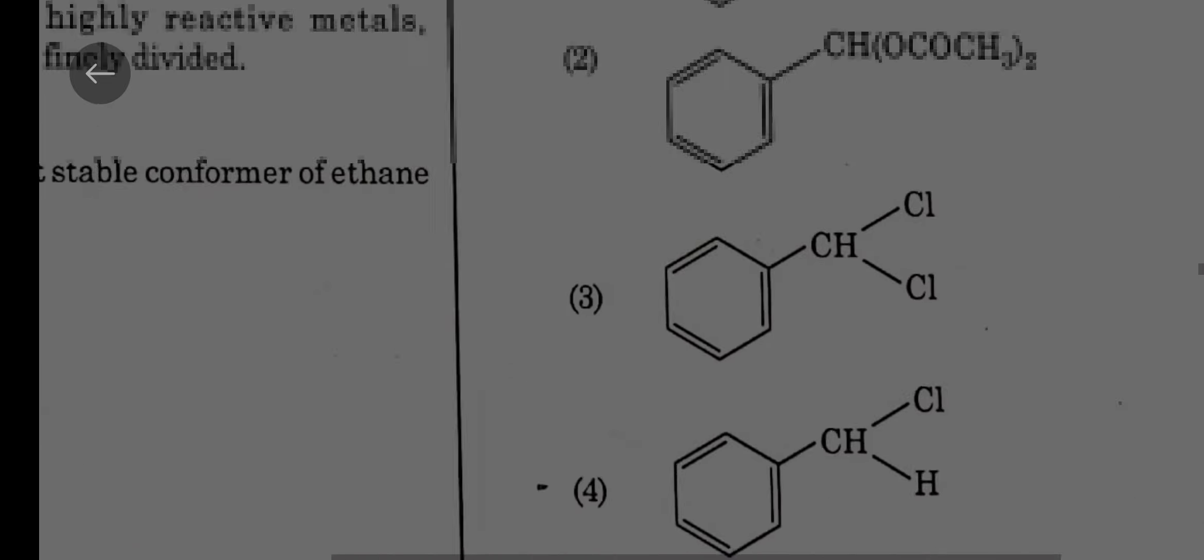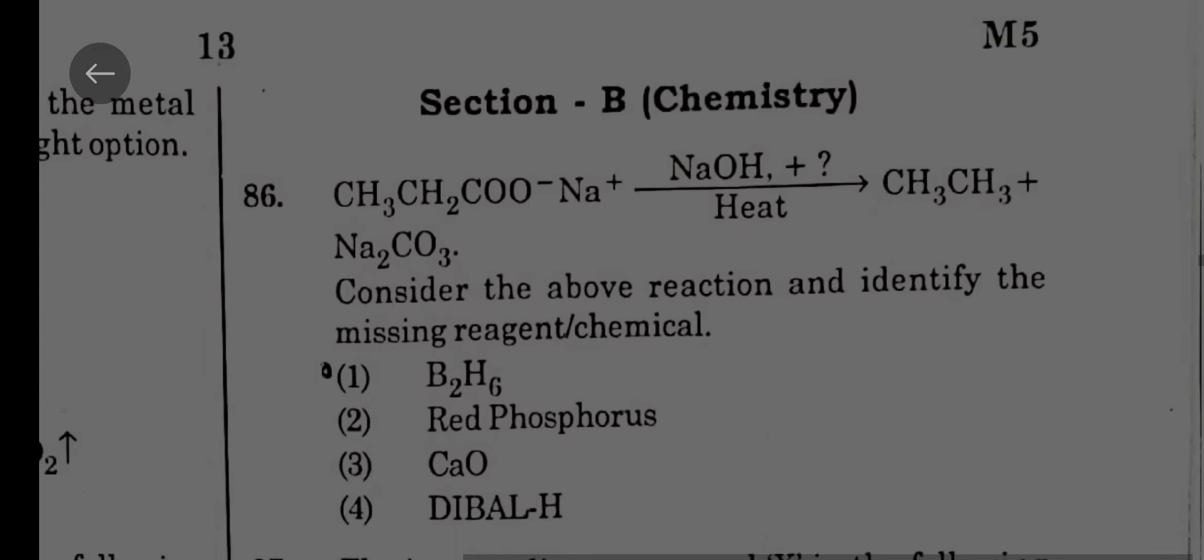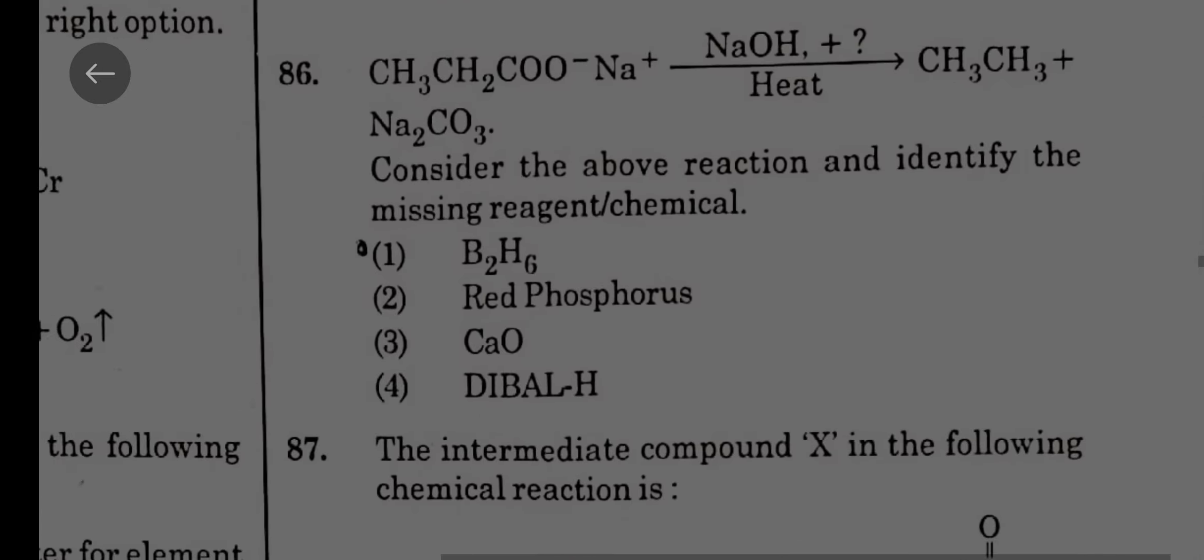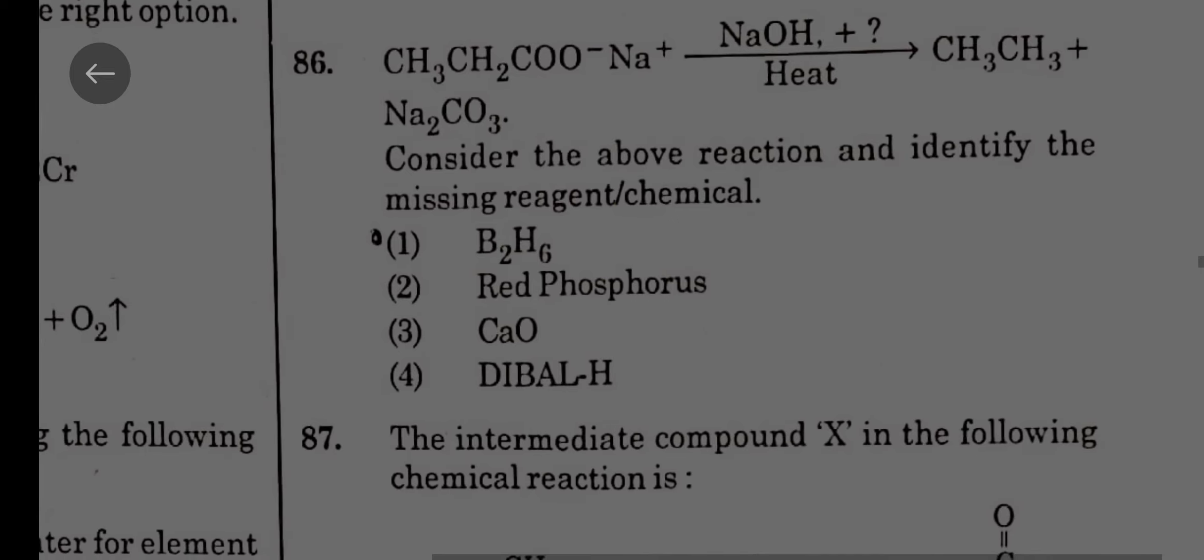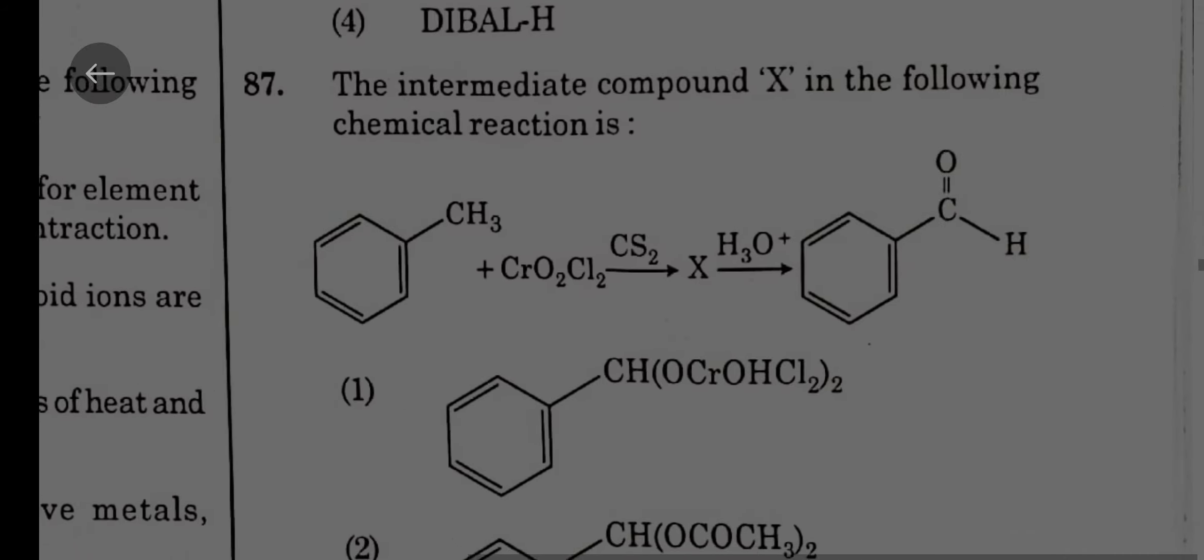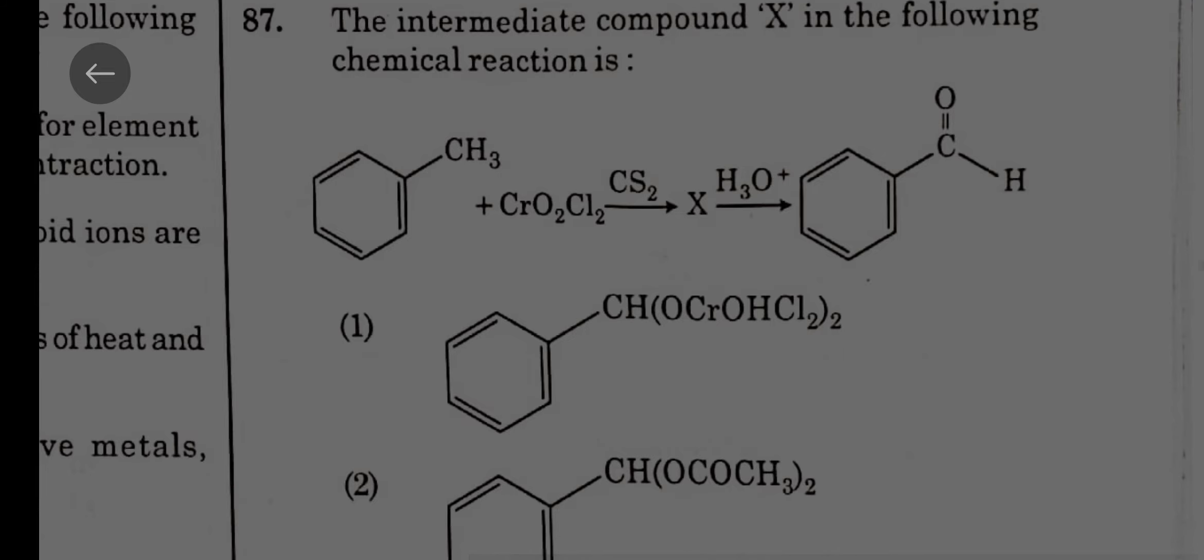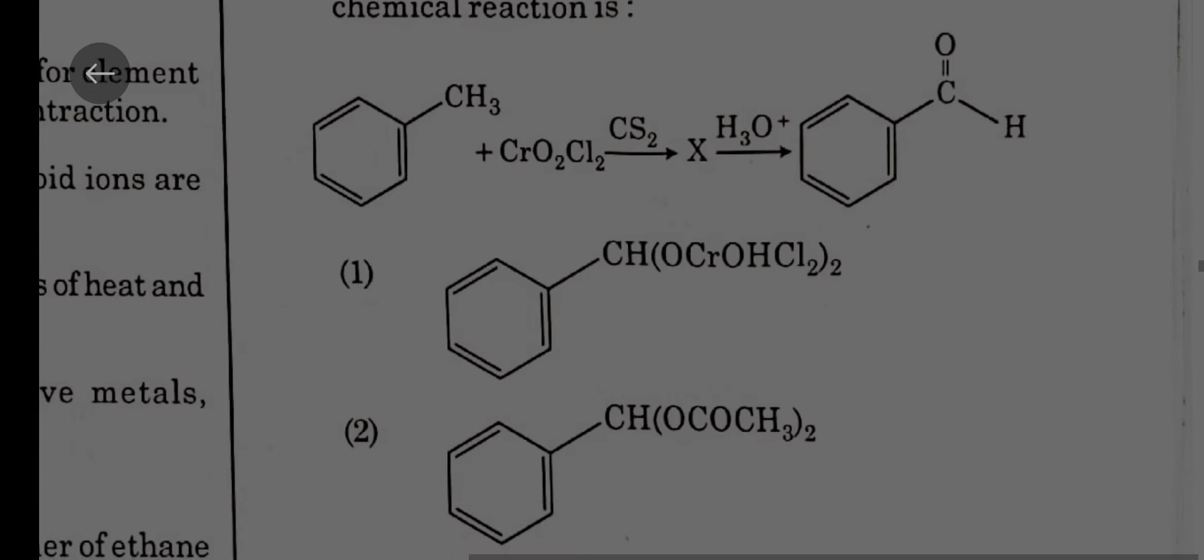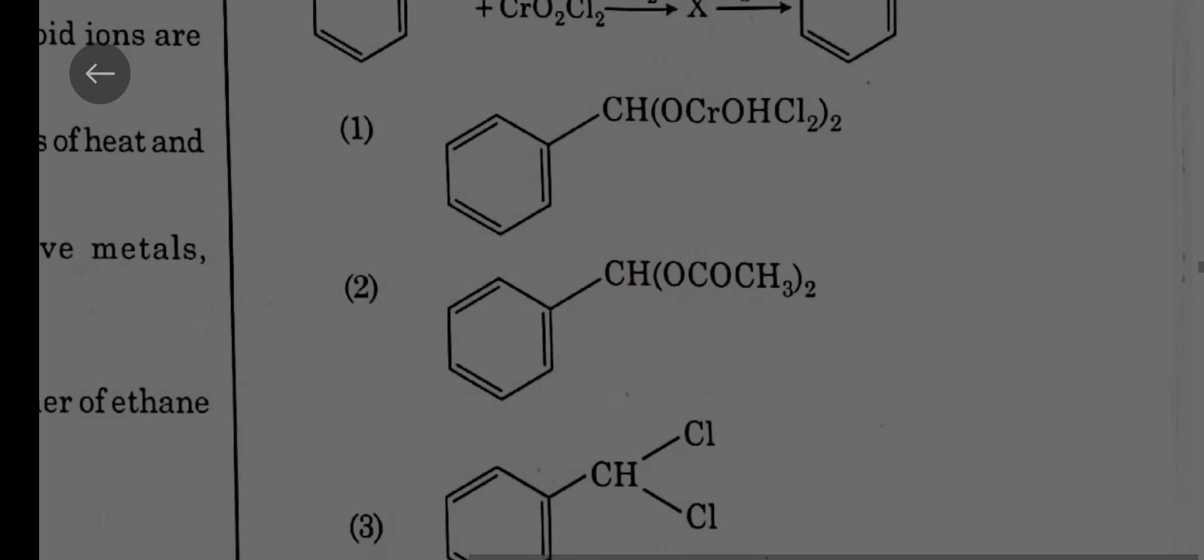CH3CH2COONa when treated with NaOH and CaO, that is soda lime. Direct question, easy question. The intermediate compound X in the following chemical reaction is: this is Etard reaction. In Etard reaction the intermediate is the first option you can see clearly in NCERT also it is given. And even by seeing here also you can easily say because that is the only option given with chromium.